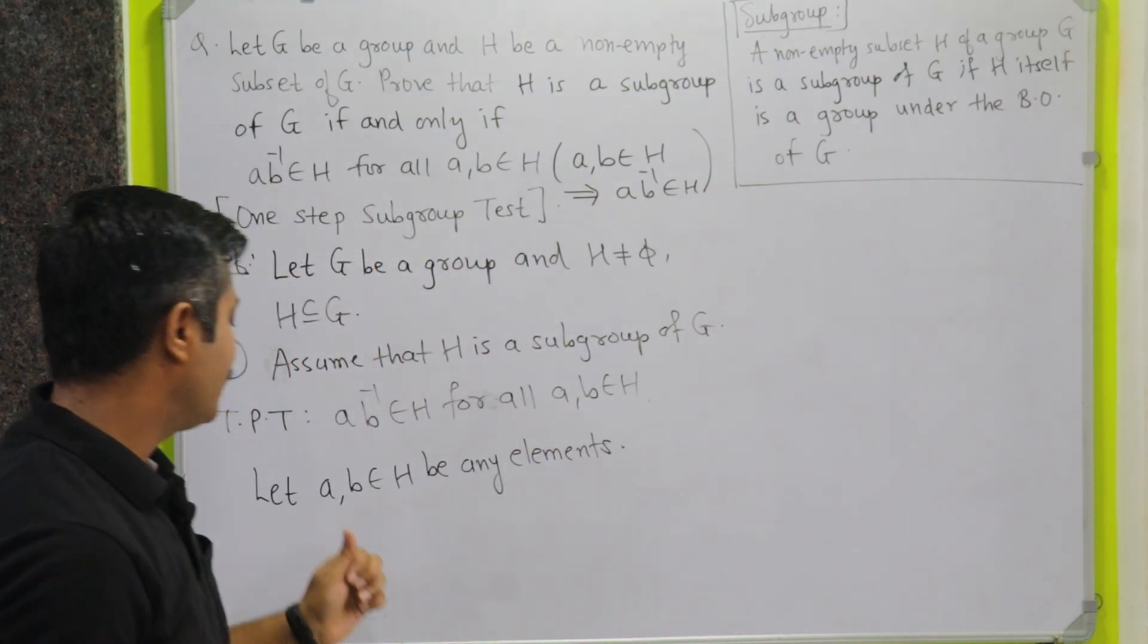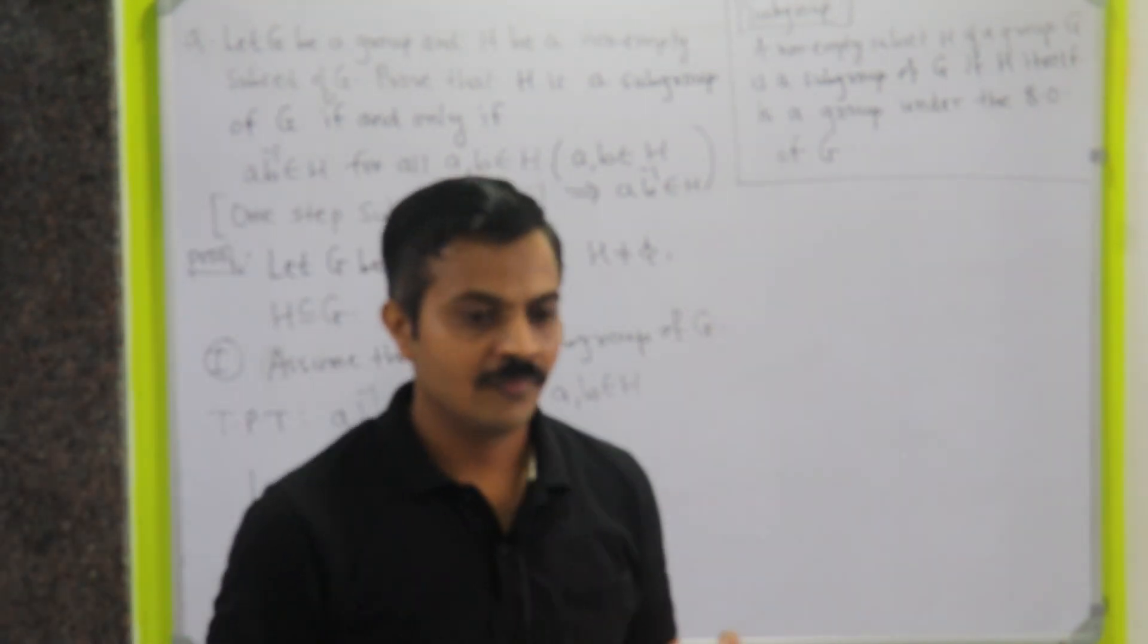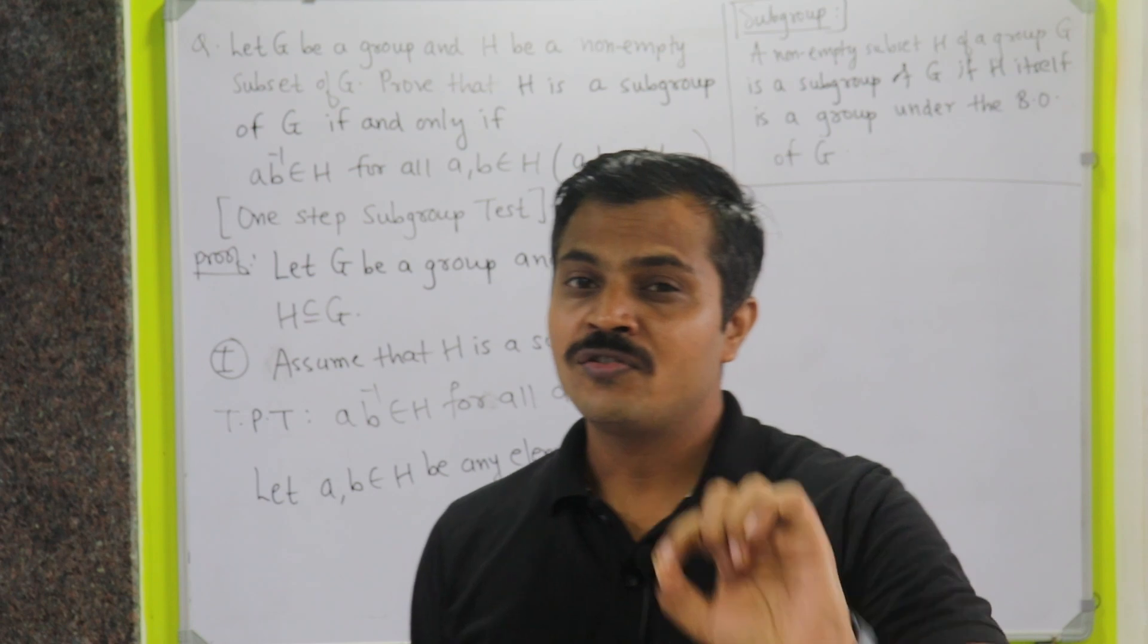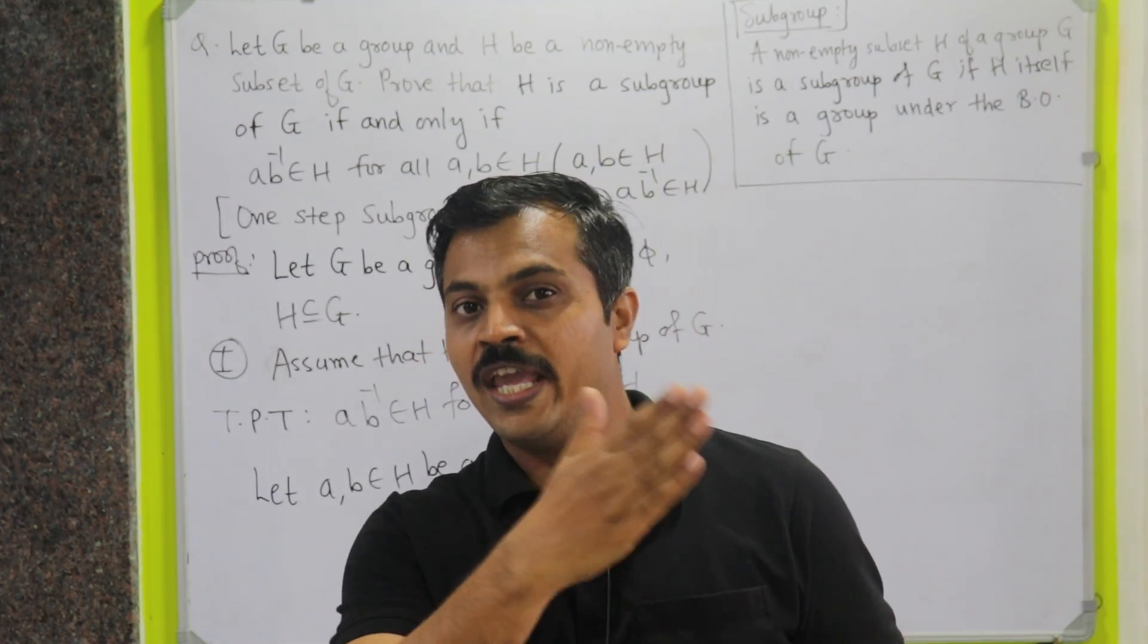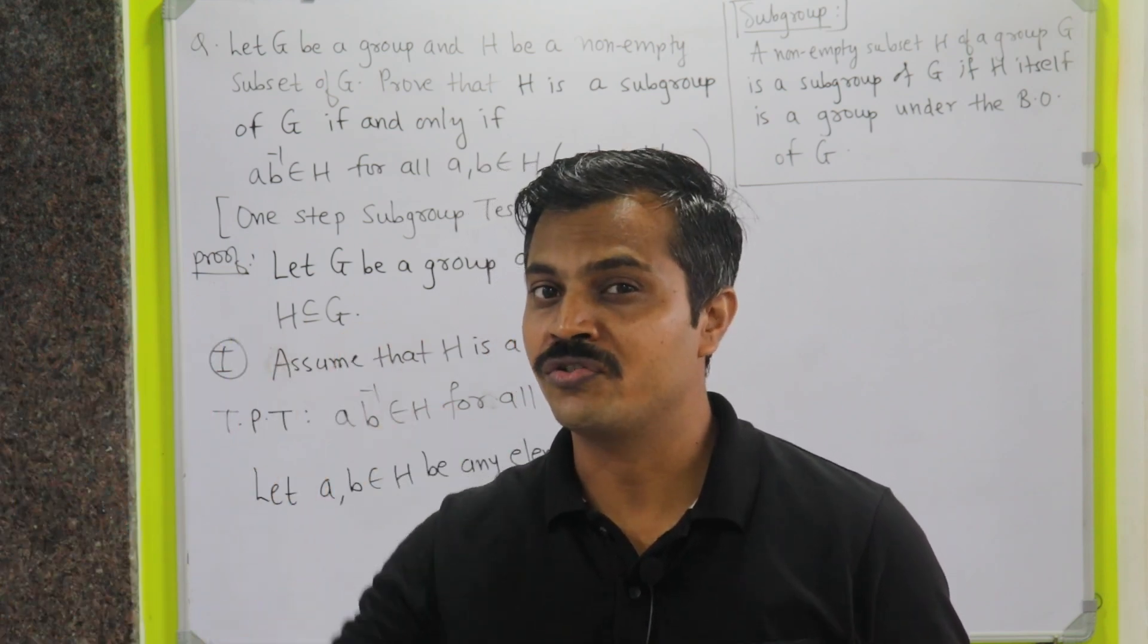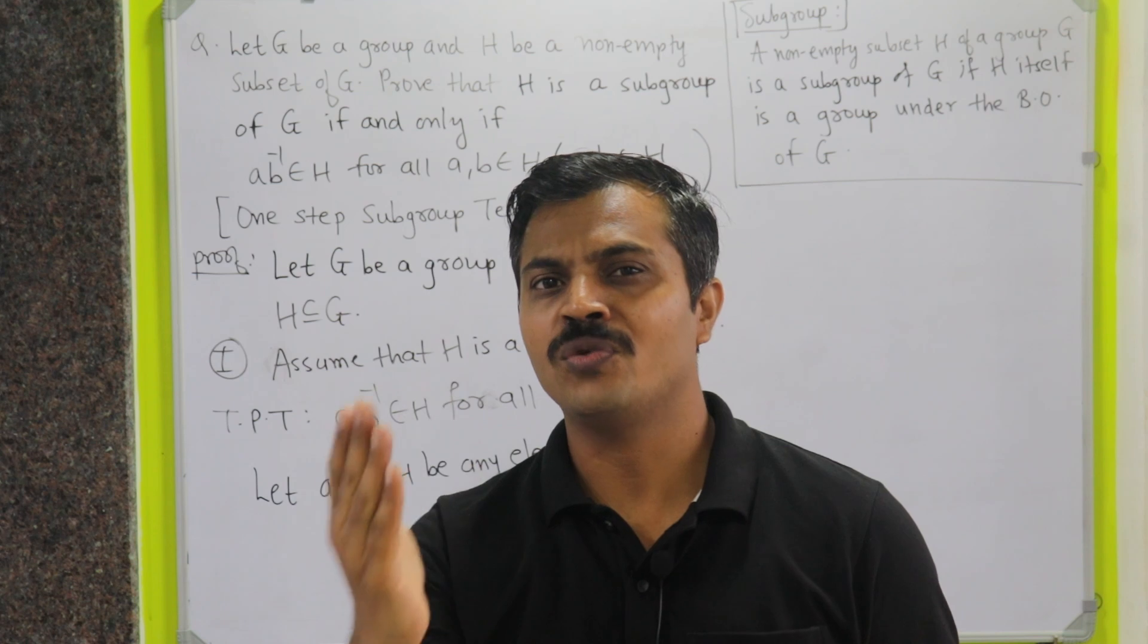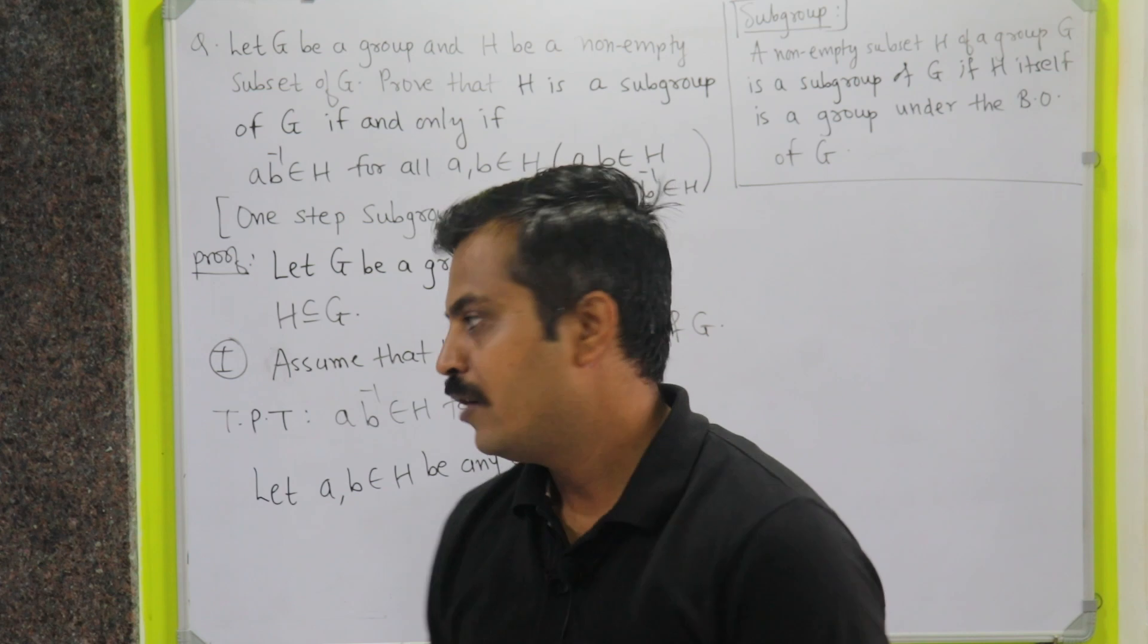In this case, as we can notice, whatever we have to prove involves B inverse. What does the existence of inverse property say for elements of H? For each A belongs to H, there will exist A inverse belongs to H such that A into A inverse will be E, which is equal to A inverse A.